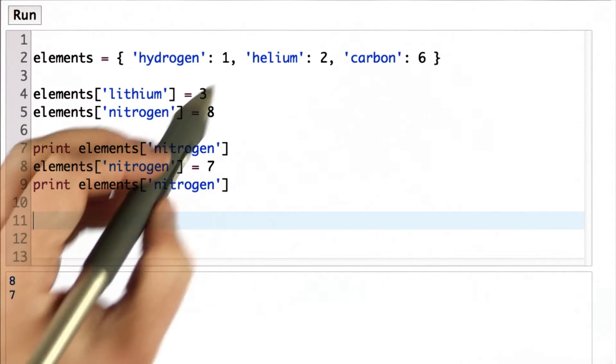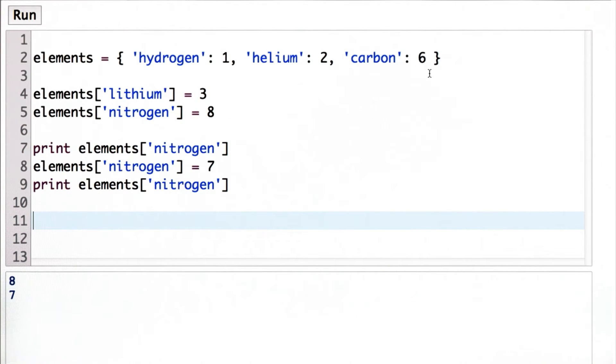So here, I've been using just numbers as the values. But the values can actually be anything we want. They could even be other dictionaries.